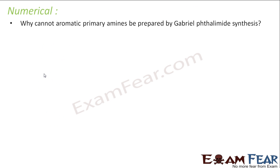The question is why cannot aromatic primary amines be prepared by Gabriel phthalimide synthesis? Gabriel phthalimide synthesis is used to prepare one degree aliphatic amines only. Why? Because it involves SN2 reaction where this alkyl halide replaces the ions. I will show you the reaction mechanism.